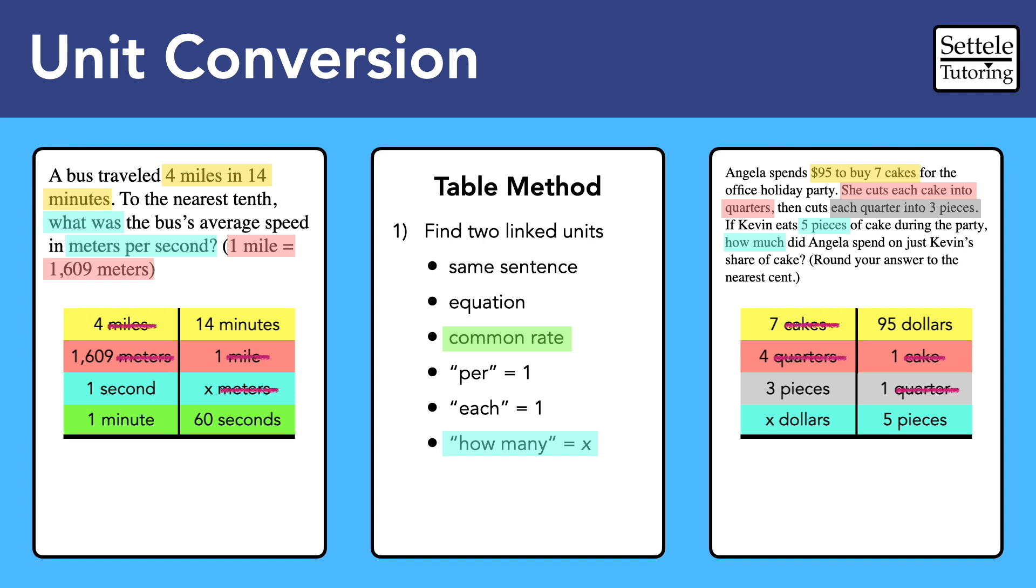Finally, you sometimes need to use common conversion rates to finish the job, mostly involving time, like 60 minutes in an hour or 7 days in a week. Just make sure that you're always balancing the units in the table. One on the left, one on the right, cross them out.